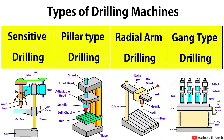In today's session, we learn about types of drilling machines and their construction. There are 7 types of drilling machines in the market. Those are Sensitive drilling machine, Vertical or Pillar type drilling machine, Radial arm drilling machine, and Gang type drilling machine.